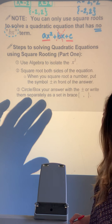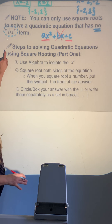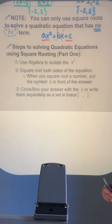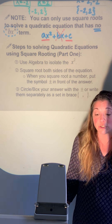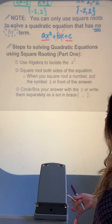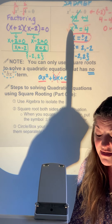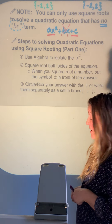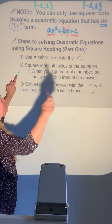Here are our official steps. The notes and steps have the pencil symbol, so please write them down. For solving quadratic equations using square roots — part one — step one: use algebra to isolate the x squared. That means inverse operations, like adding 4 to move it to the other side, getting x squared alone, almost like a regular equation.